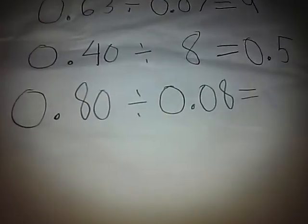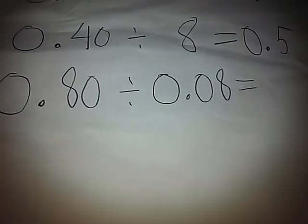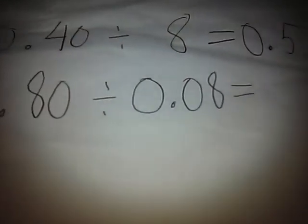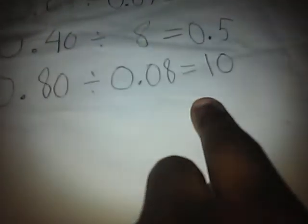0.80 divided by 0.08, 80 hundredths divided by 8 hundredths. Correct! There are two decimals, so just write it as a number. Now, let's go to multiplication.